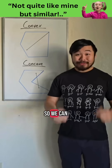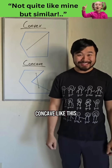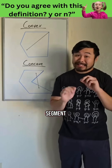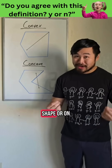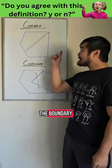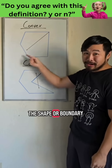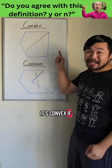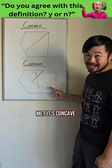So we can define convex and concave like this: if every line segment connecting any two points inside the shape or on the boundary stays entirely inside the shape or boundary, it's convex. If that criterion isn't met, it's concave.